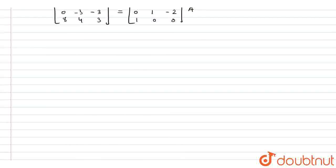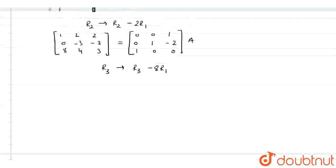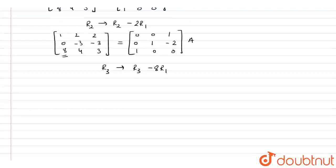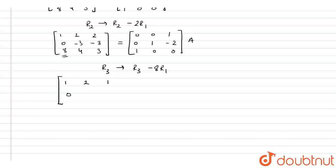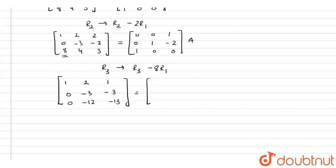The third operation we will apply is R3 = R3 − 8R1, because we have to make 0 in that position. After applying this operation, we get [1, 2, 2; 0, −3, −3; 0, −12, −13], equal to [0, 0, 1; 0, 1, 0; 1, 0, −8] multiplied by A.